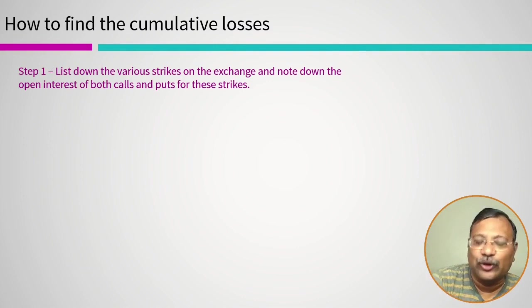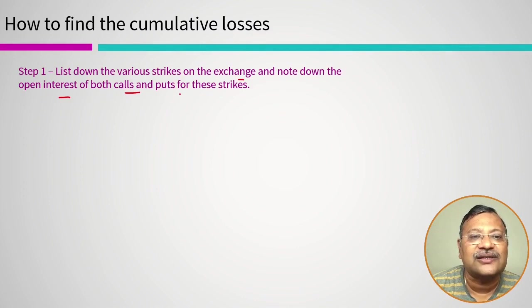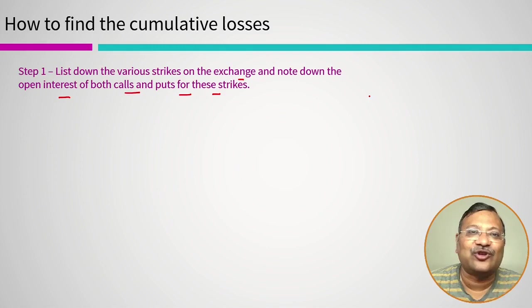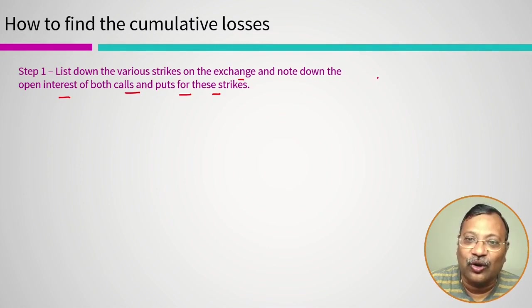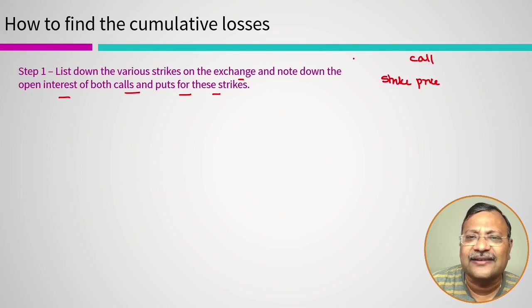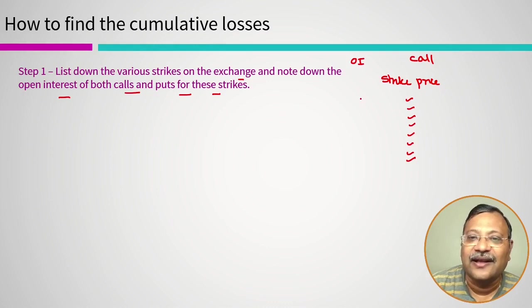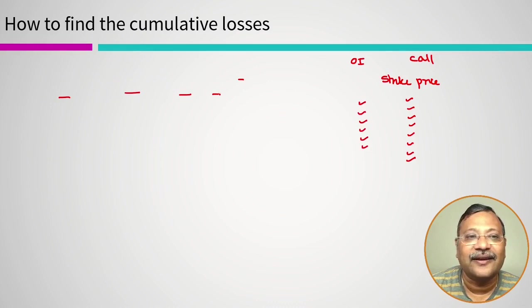Step 1: List down the various strike prices on the exchange and note down the open interest of both the calls and the puts for each strike. When we look at the option chain data table, we can see all the various strike prices and their open interest. We take down all strike prices — whether in the money or out of the money — and all the open interest against each. We do the same for puts.